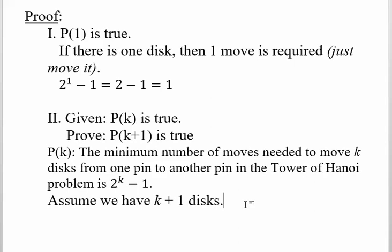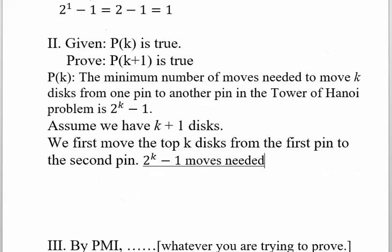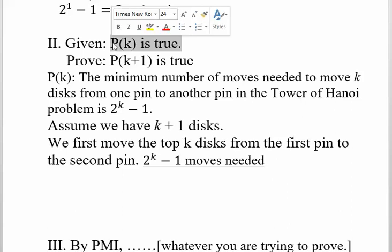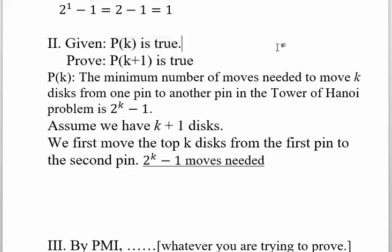Let's see how many moves this would require. So we first move the top k disks from the first pin to the second pin. And we know that this requires 2^k - 1 moves. This statement right here is what is called the inductive hypothesis. It is what we know.